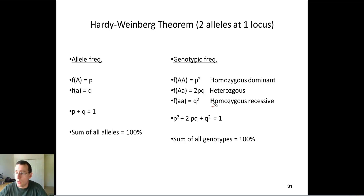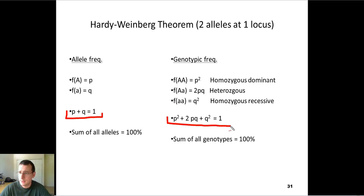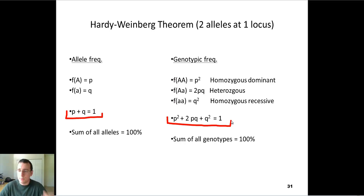That means you generate two formulas from these principles: the sum of all alleles equals 1, and the sum of all genotypes equals 1 — and both of those just make sense. Using these two formulas, you can make predictions about how generations are passed on and about the composition of any given population at any given generation.